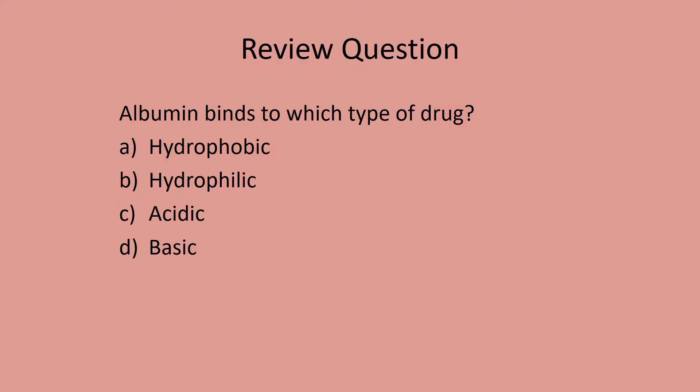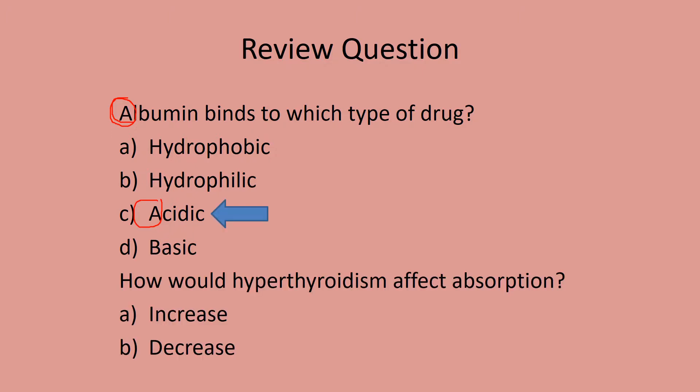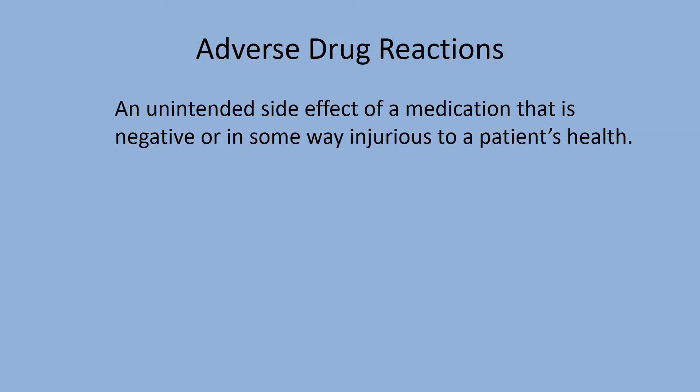Review question: albumin binds which type of drug? Using the mnemonic alliteration — albumin is for acidic drugs. How would hyperthyroidism affect absorption? Hyper means increased, so you're going to have a higher metabolism. In general, rate and amount of absorption will increase with higher metabolism — just like in children. Transitioning now to adverse drug reactions, when you take a drug it can cause many effects, some positive and some negative.